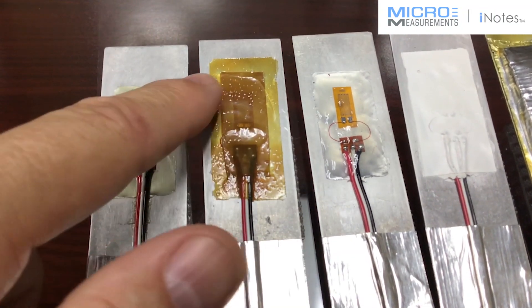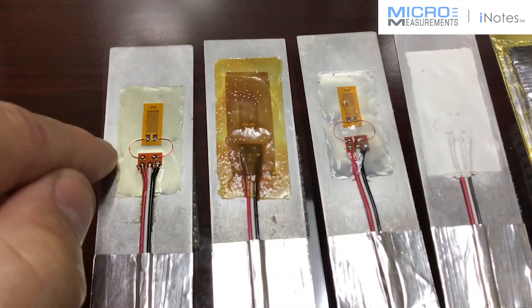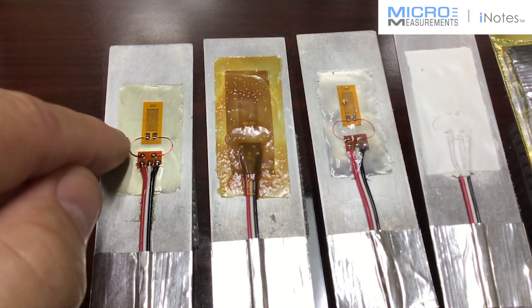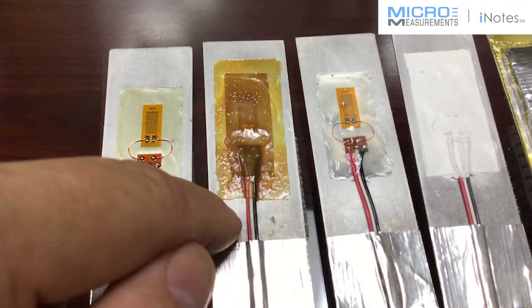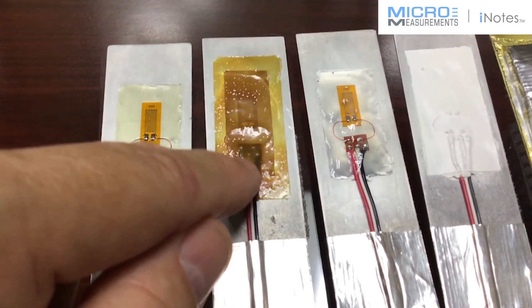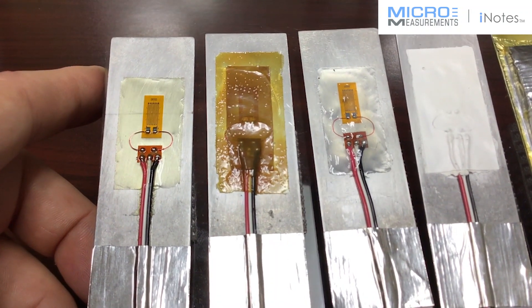A lot of times this is used as an overcoat. Much more chemical resistant than the M-Coat A and a better moisture barrier as well. So a lot of times you'll see M-Coat B is like the last environmental coating that gets applied over top of the strain gauge to protect it.